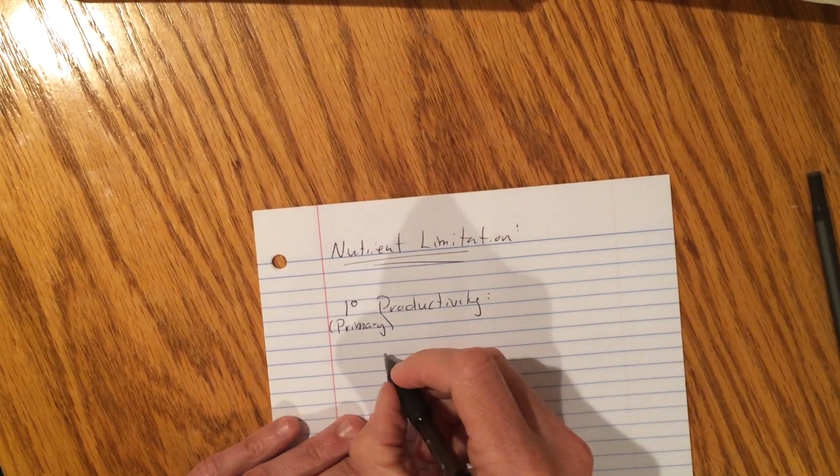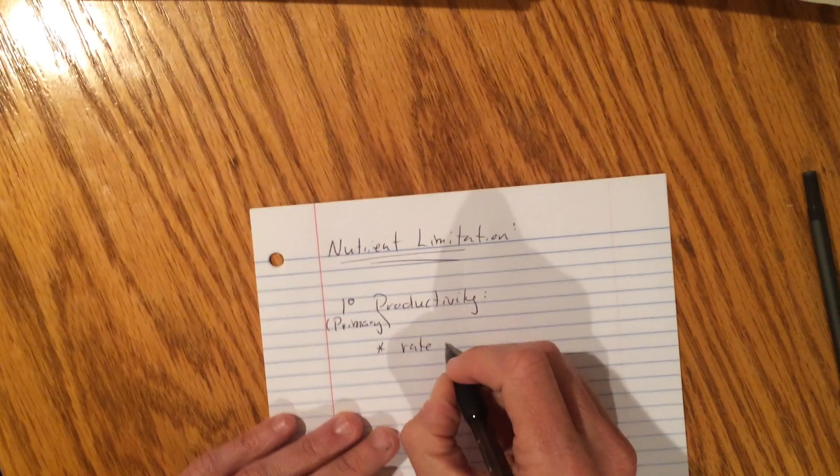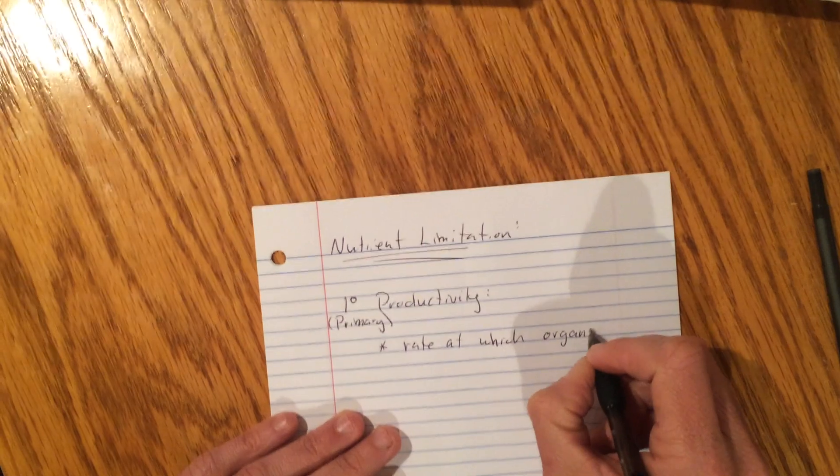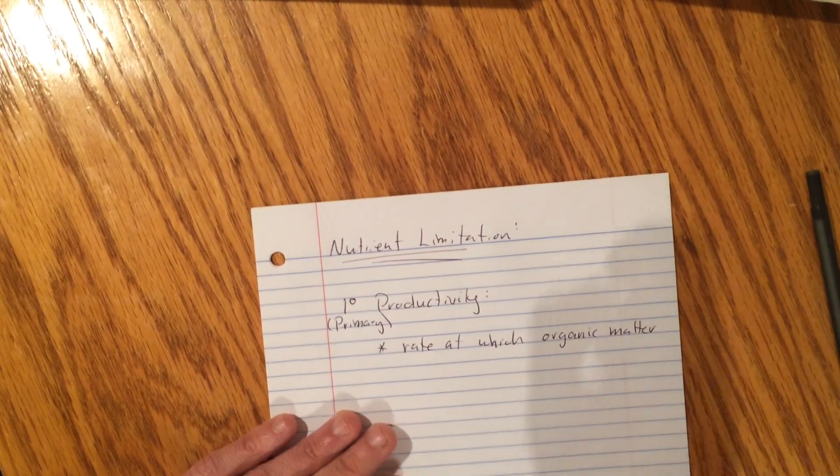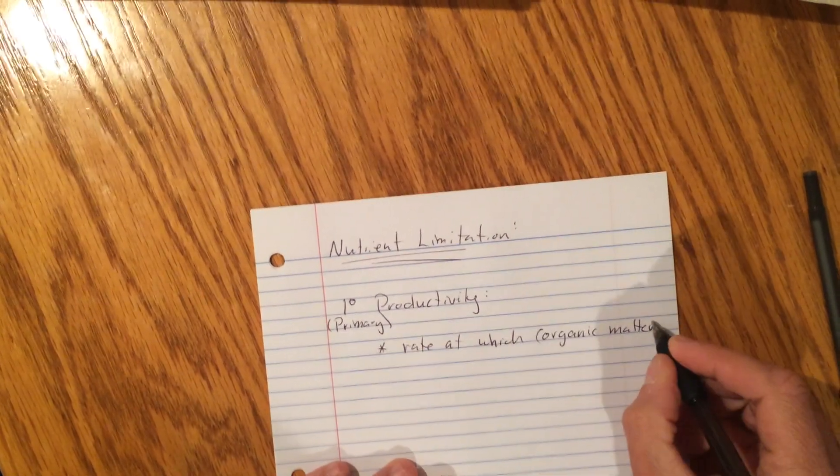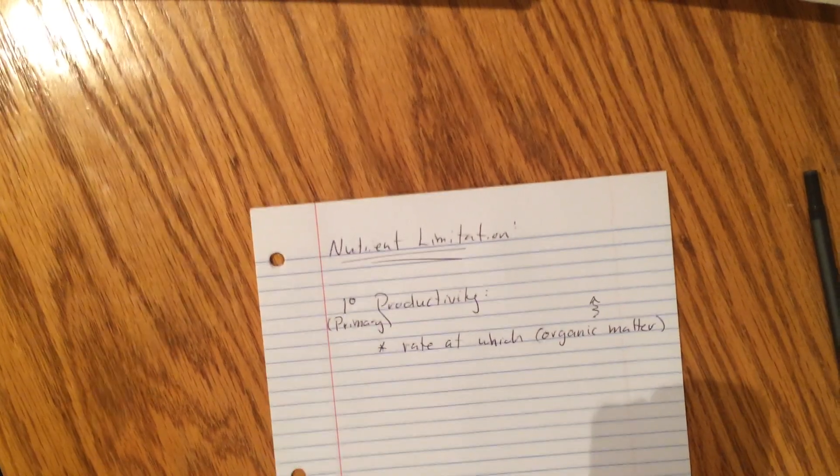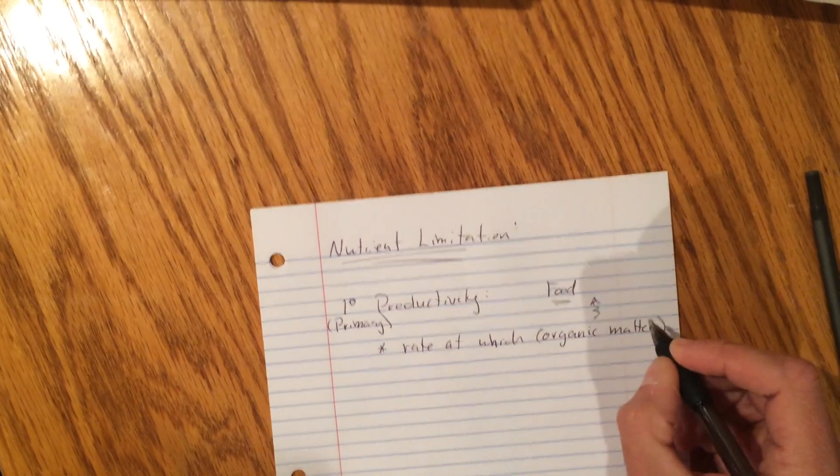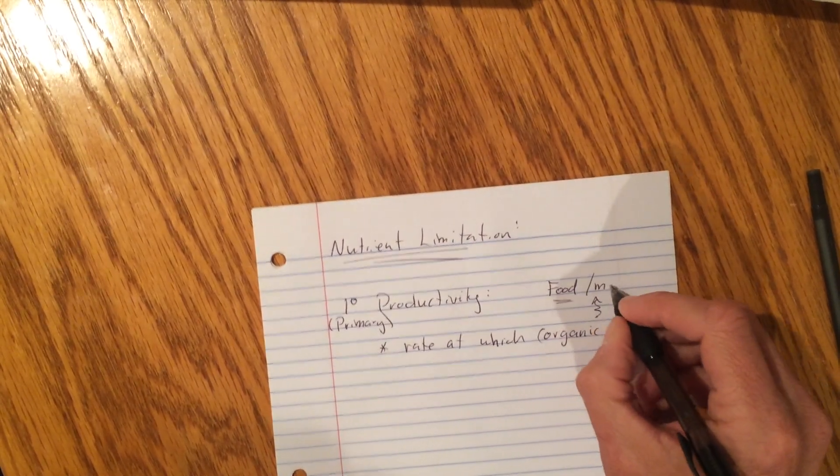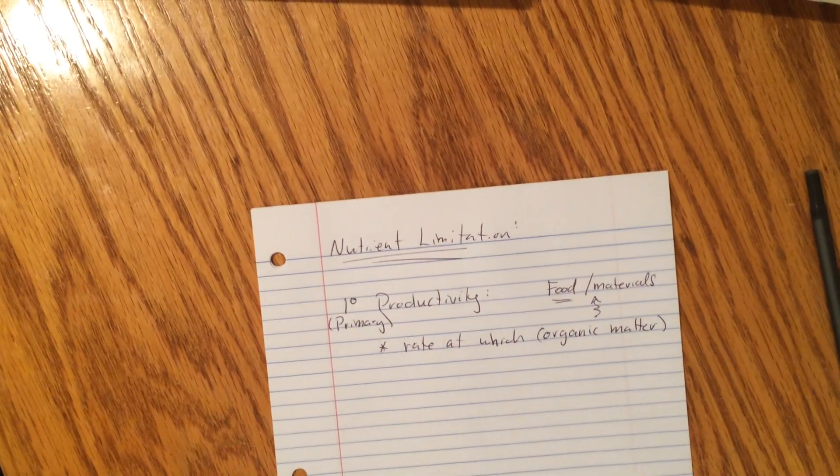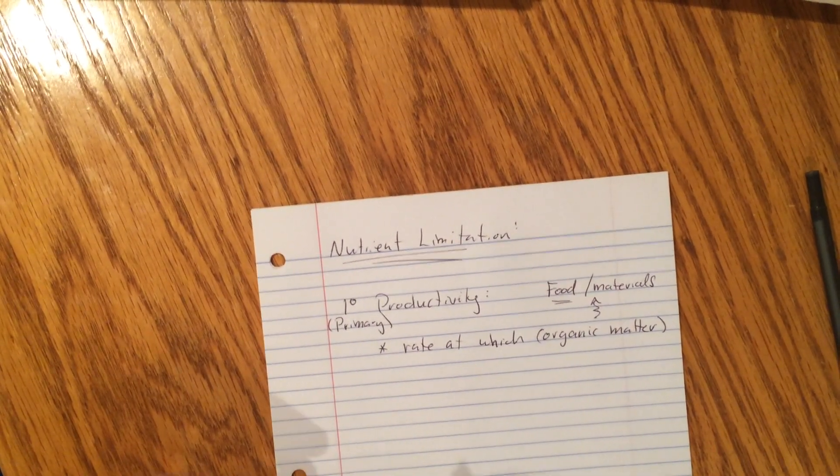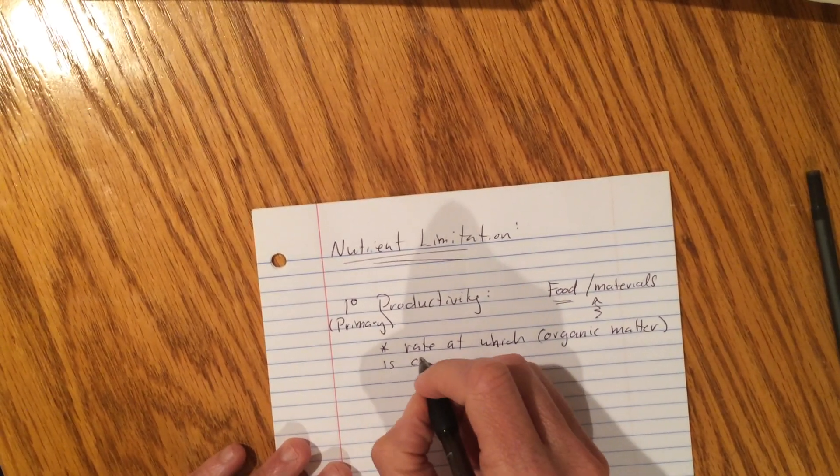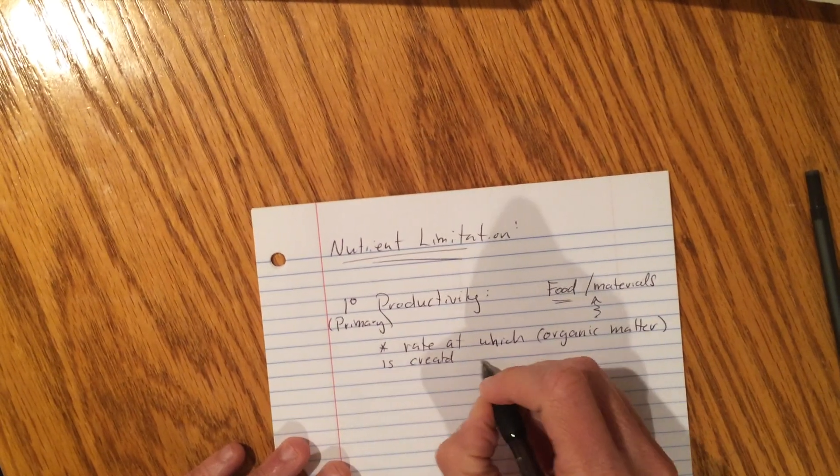Primary productivity is the rate at which organic matter... Now when you look at this term right here, organic matter, I mean that can be a lot of things. For the most part though, that would be food for the rest of us, or it could just be the materials that the rest of us need to survive and build our own cells.